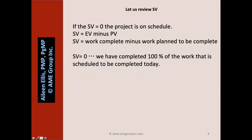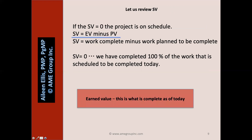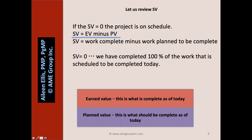Let's review. If the schedule variance equals zero, the project is on schedule. Schedule variance equals EV minus PV — work complete minus work planned to be complete. If the SV is zero, we've completed 100% of the work that is scheduled to be completed today. Earned value is what is complete; planned value is what should be complete. If they equal each other, we are on schedule, or we might say the schedule variance equals zero.